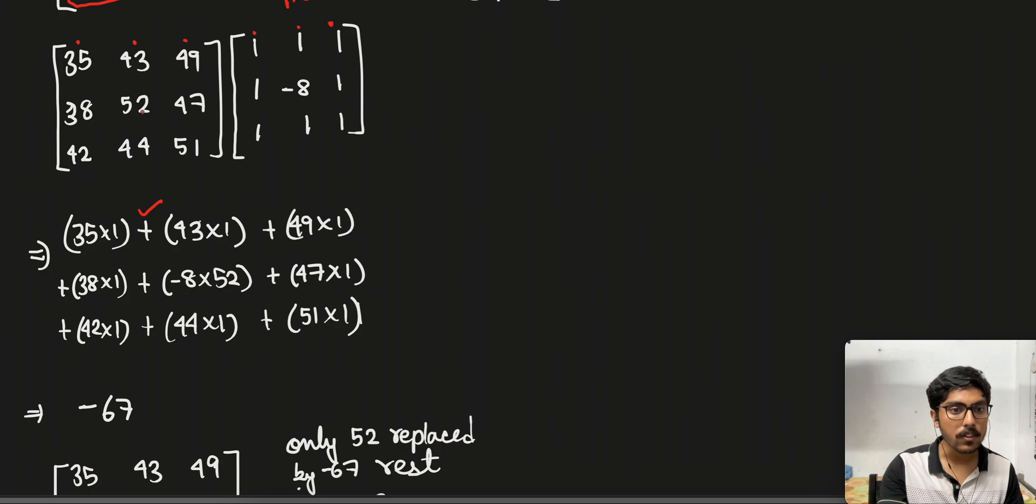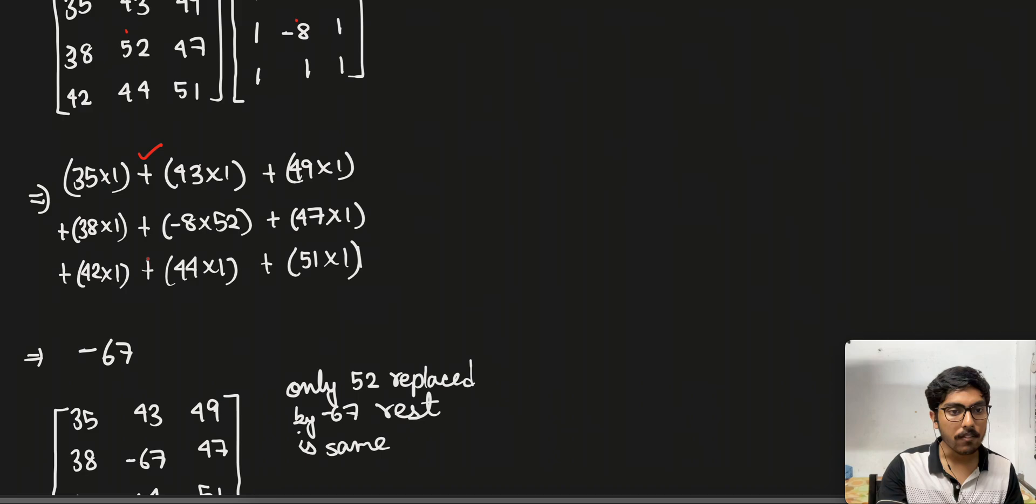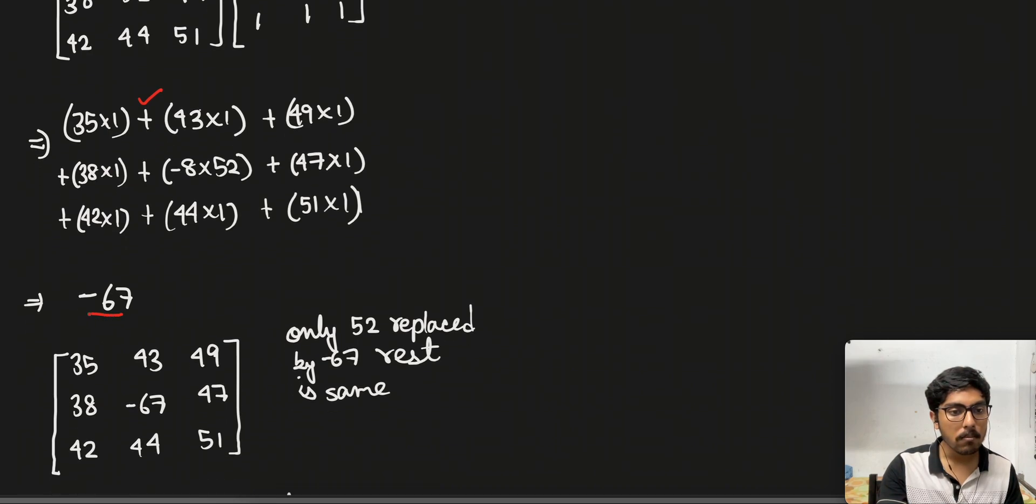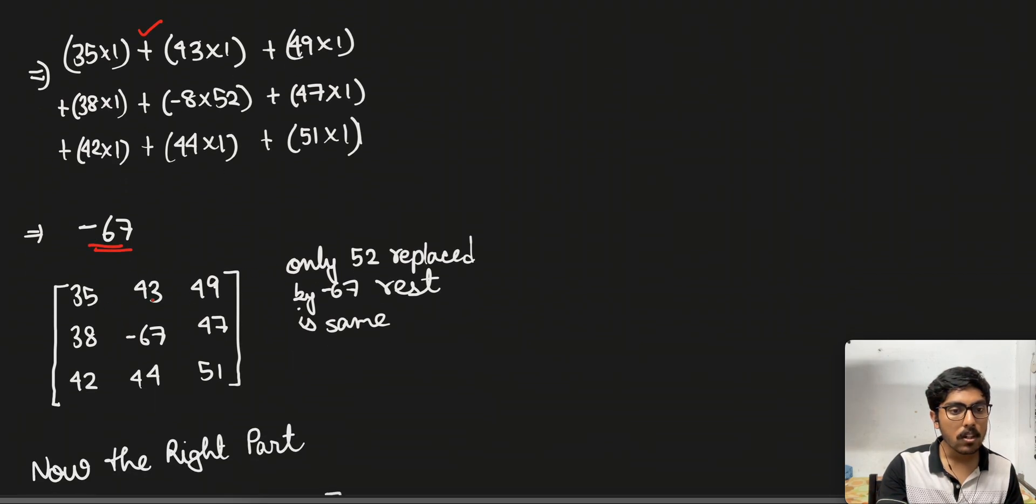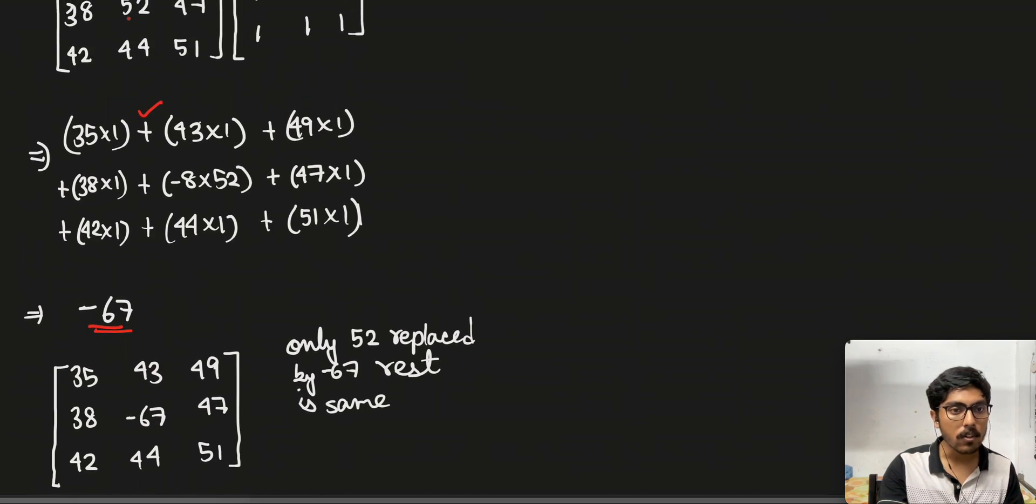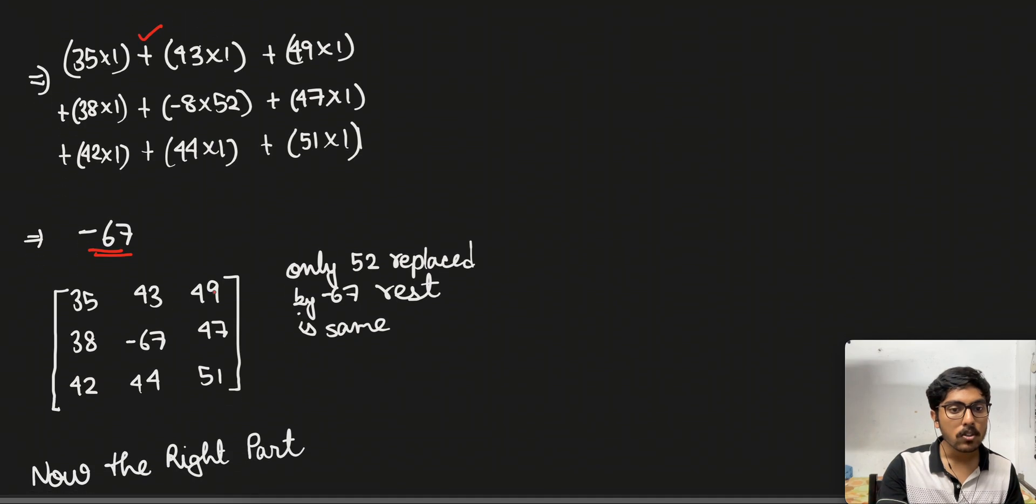So after calculating all this we will get minus 67. So we will put minus 67 into the matrix where there used to be 52. So only 52 got replaced by minus 67 and the rest will remain the same.